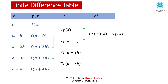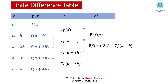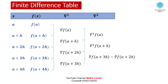For the second differences: del² f(a+2h) equals del f(a+3h) minus del f(a+2h), and del² f(a+h) is computed similarly from the first differences.